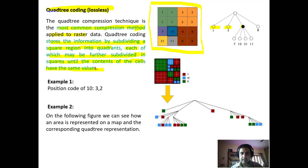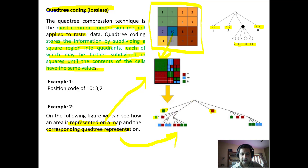Values one, three, and eight remain undivided, while the block is divided into seven, ten, thirty-one, and eleven. The value ten is further subdivided into sub-blocks. This is how the area is represented on the map, and this is the quad tree representation of the same. Some values remain undivided, one value is divided into two, two remain undivided, and one is further divided into four, and again into four.